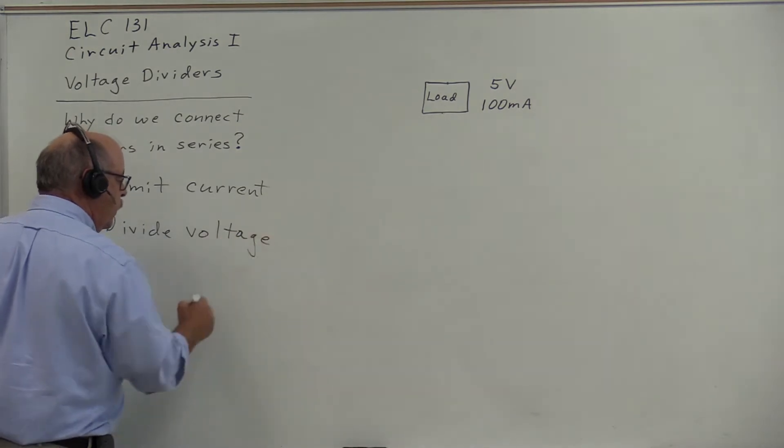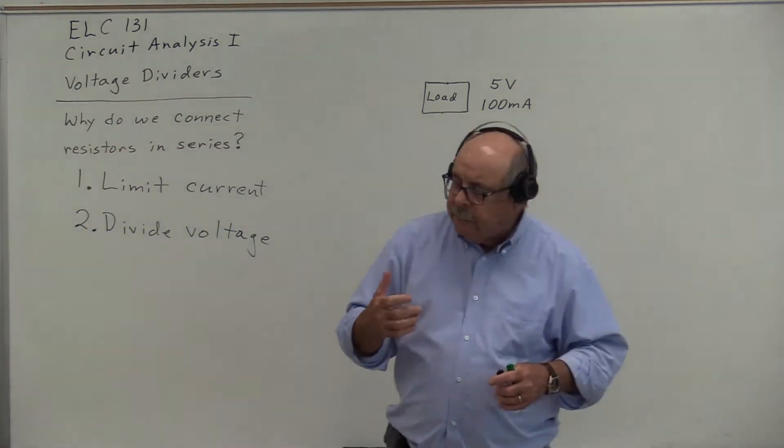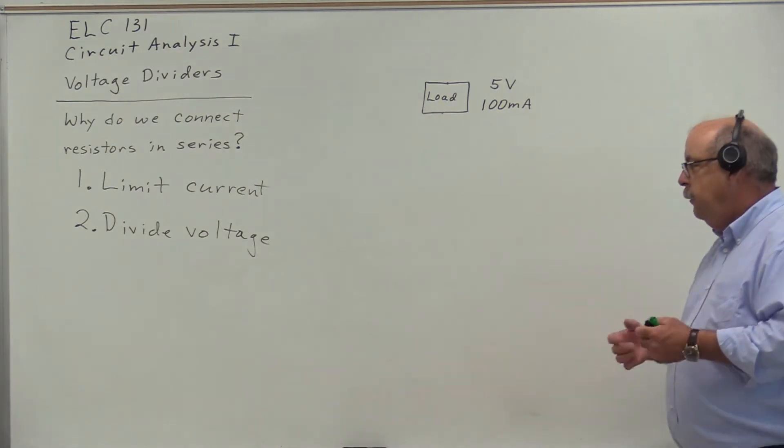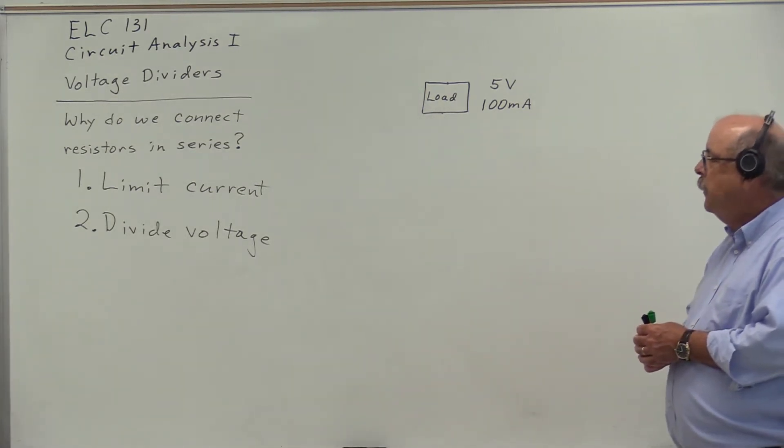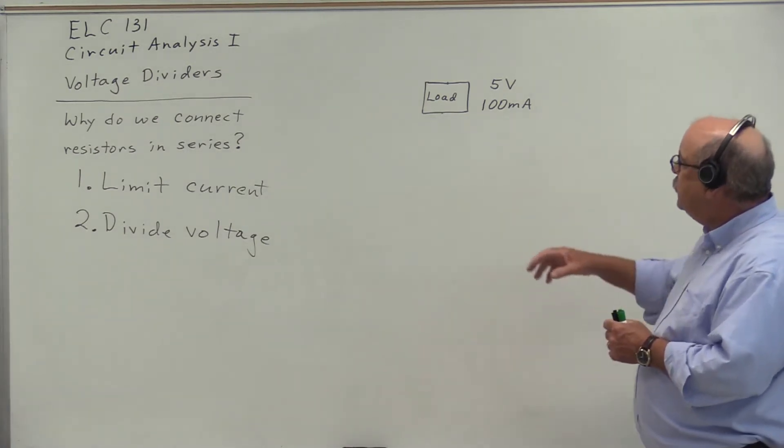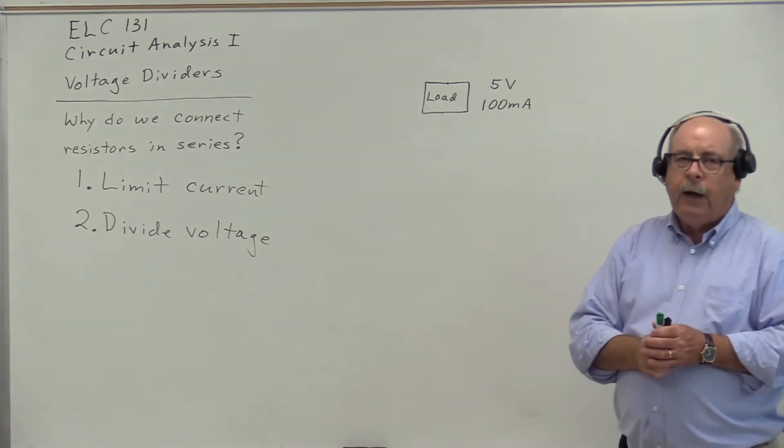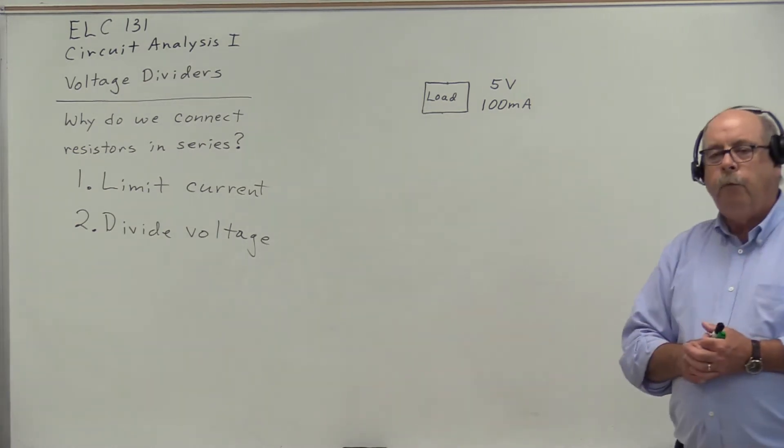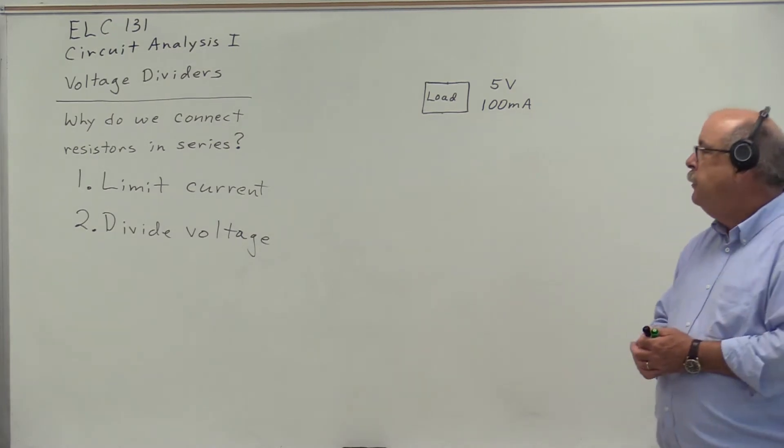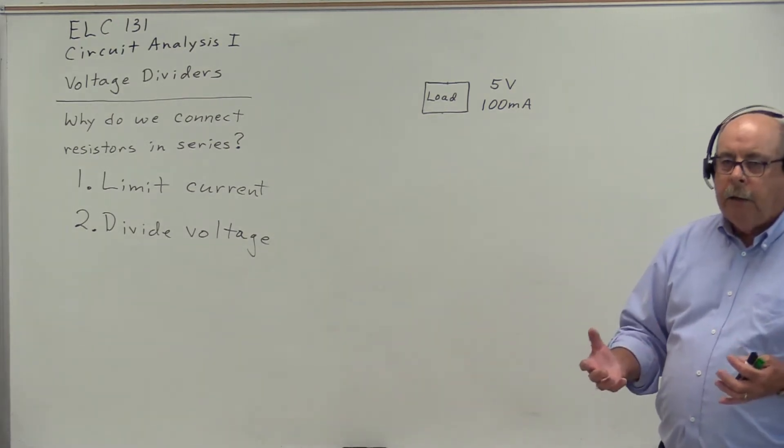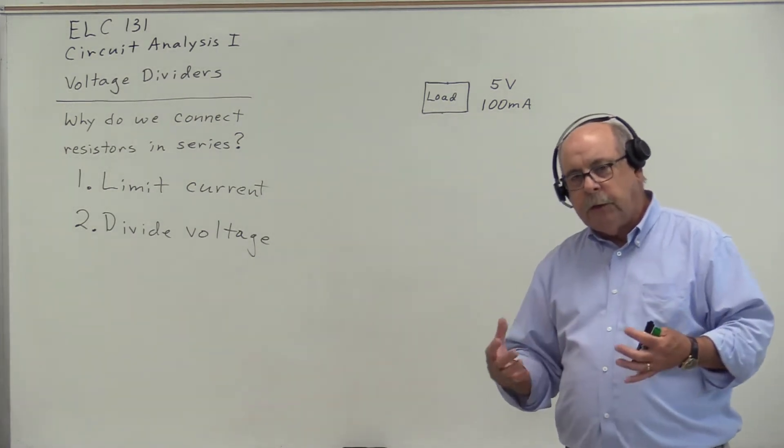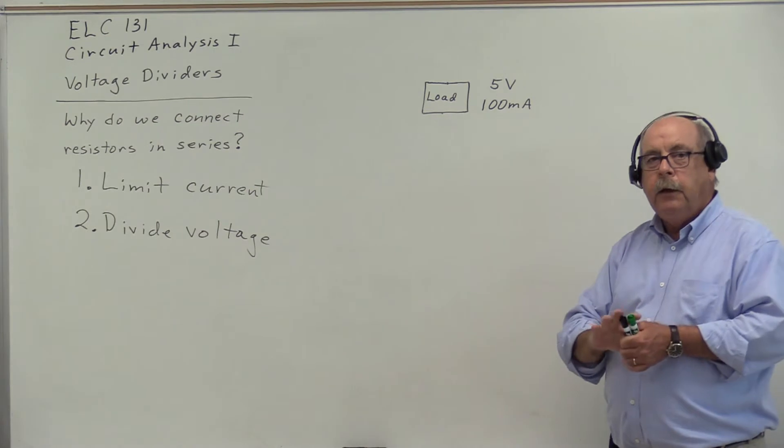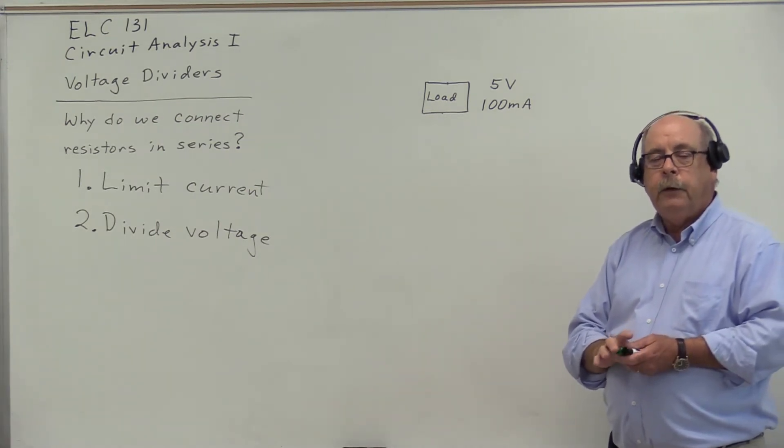These are really the same thing, just a different way of looking at the reason we connect resistors in series. Let's look at an example. We've got some load that requires 5 volts to be applied. When 5 volts are applied, this load will draw a current of 100 milliamps. This load could be an Arduino, a Raspberry Pi, or some digital logic circuits you have constructed.